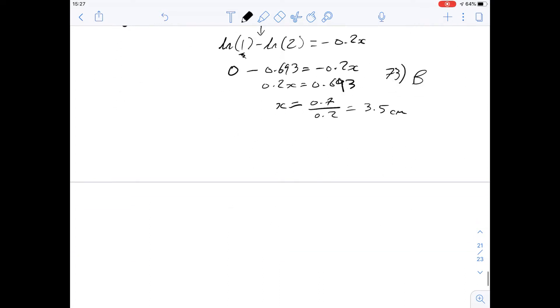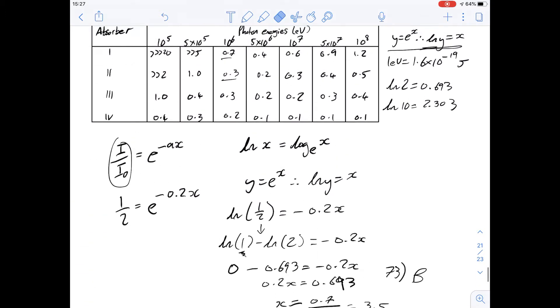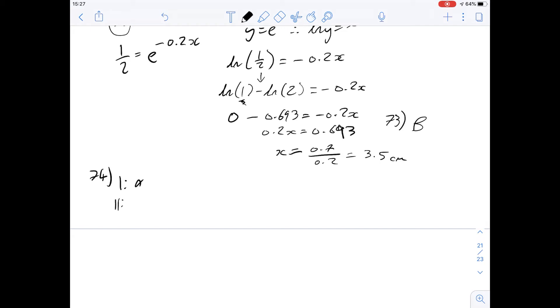So if we look at question 74 now it says how thick should a foil made from absorber 2 be to give the same absorption as a 1 millimeter thick foil made of absorber 1 for x-rays of energy 5 times 10 to the 6. Okay so for absorber 1 and for absorber 2 we can go to the table that I have here and we can see what we're looking at and we're looking at 0.4 and 0.2 for the values of a. So 0.4 and 0.2 the value of x for absorber 1 is going to be 1 millimeter and it's what we're working out for absorber 2. So we'll just leave that as x.